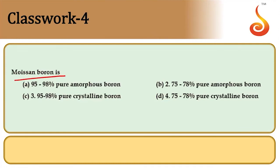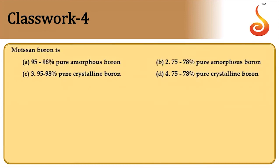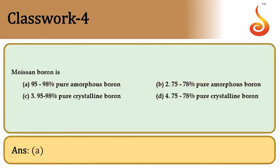Moisen boron is 95–98% pure boron, which is called amorphous boron. Answer is option A.